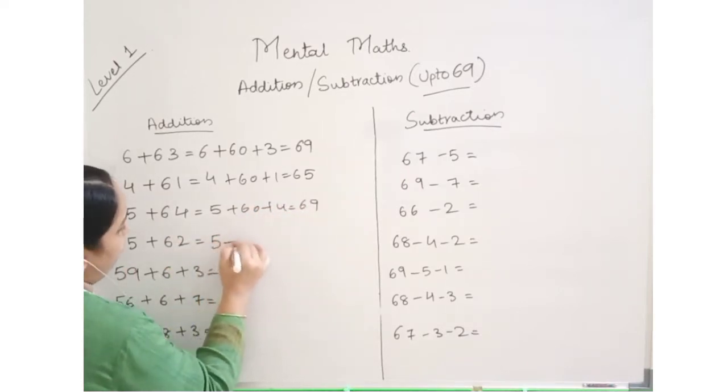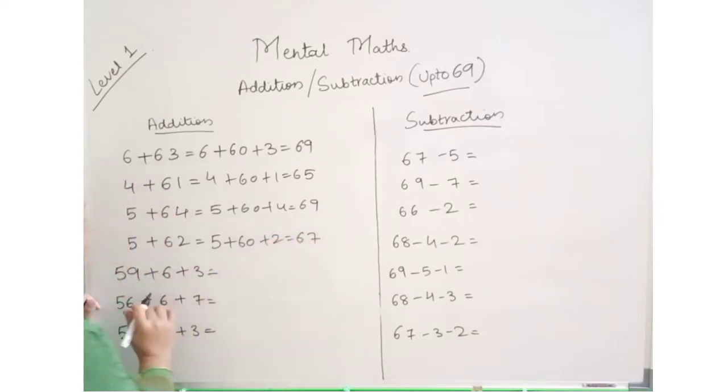5 plus 62: 5 plus 60 plus 2, answer is 67. This is the reason to break down the numbers - so we can work with smaller digits and the answer is accurate.